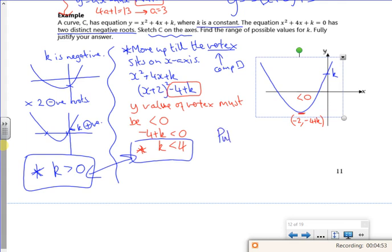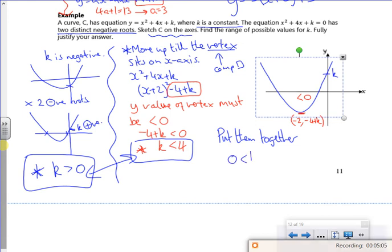So what I need to do is put them two solutions together. I've got k is less than four, and I've got k is greater than zero. So I need to put zero less than k, less than four.